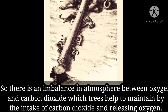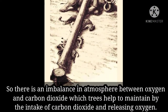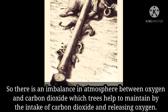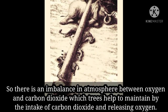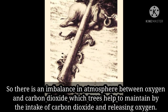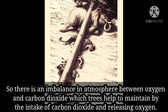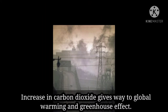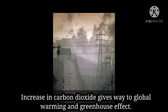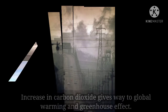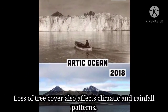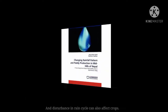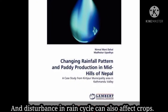The reduction in tree cover causes an imbalance in the atmosphere between oxygen and carbon dioxide, which trees help maintain by taking in carbon dioxide and releasing oxygen. The increase in carbon dioxide gives way to global warming and the greenhouse effect. Loss of tree cover also affects climatic and rainfall patterns.